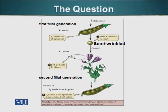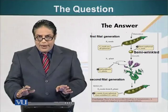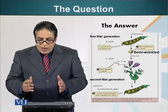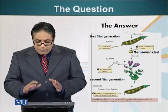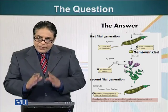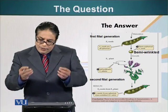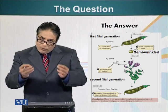Mendel got the first generation result of his experiment, which produced all spherical seeds. Now, if the blending concept was correct, all these seeds would be semi-wrinkled and semi-spherical. It was as if the wrinkled seed trait had completely disappeared, because none of the plants of the F1 generation — which stands for first filial generation — had any wrinkled seeds. Here we could see the blending theory was incorrect, because the blending theory would have predicted that offspring would have a mixture of characteristics from both parents.